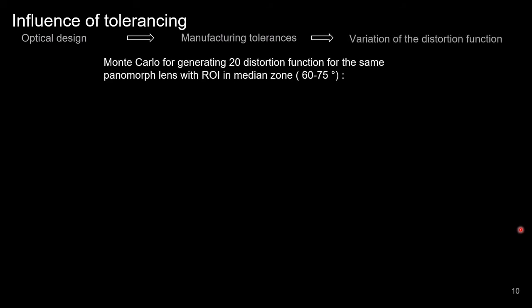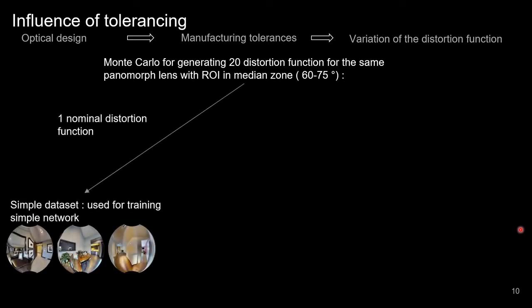Then, to better represent the optical system, we realized the second experiment to simulate possible variation in the distortion function due to manufacturing tolerances. Taking a median augmented lens as an example, we use its nominal distortion function and we randomly generate 20 functions within the tolerances. We created a first simple dataset using the nominal function and trained the network in the same condition as before.